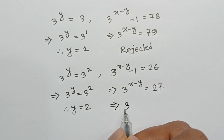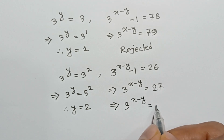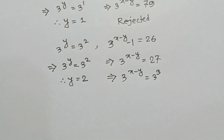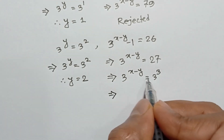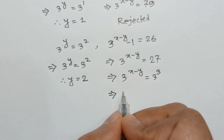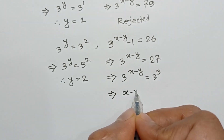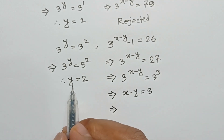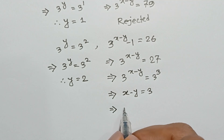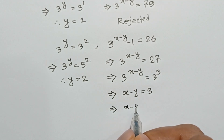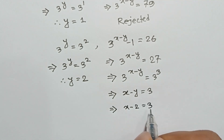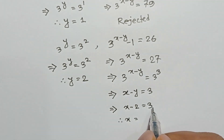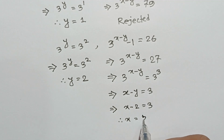3 to the power x minus y is equal to 3 to the power 3. Since the bases are the same, the powers are equal, so x minus y is equal to 3. Putting y equal to 2, we get x minus 2 equals 3, so x equals 3 plus 2, which is equal to 5.